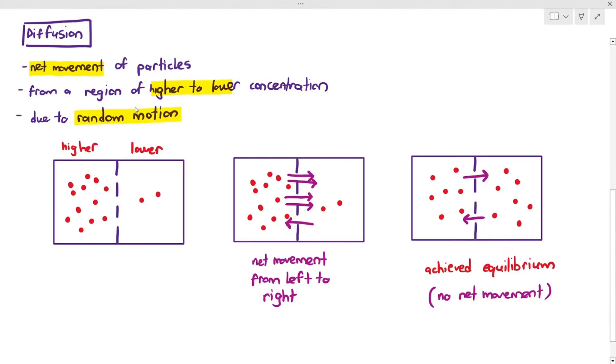So in this case, when the amount of particles moving to either sides are equal, we would say that this is no more net movement.